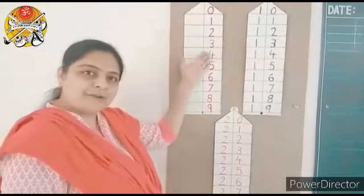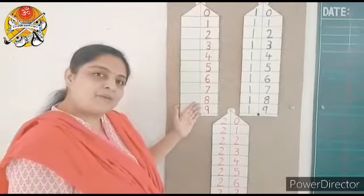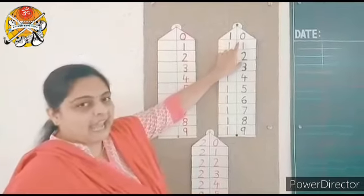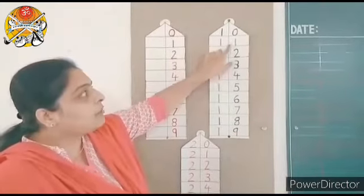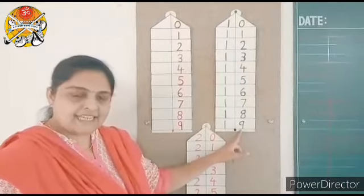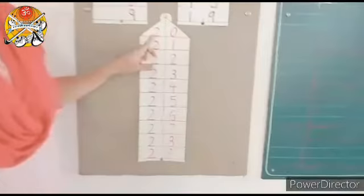This is house of 0 and 1 digit numeral come in this house. And this is house of 10 and numerals 11 to 19 come in this house.